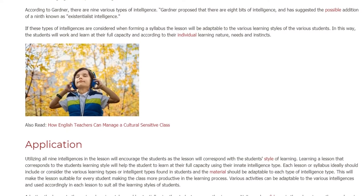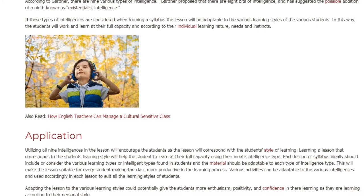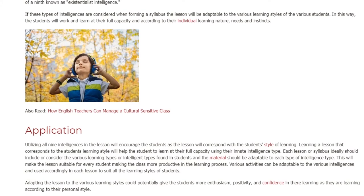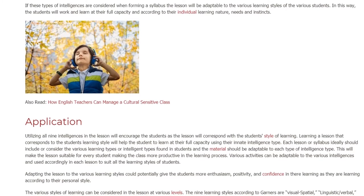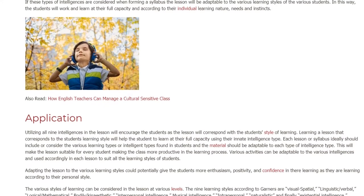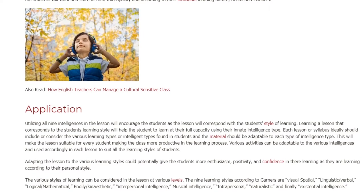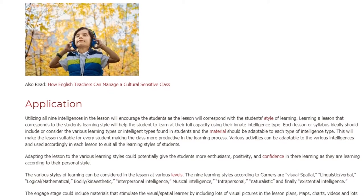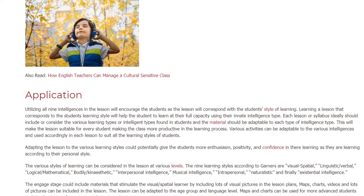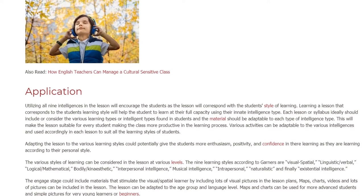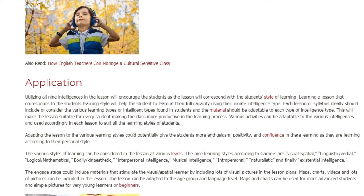Learning a lesson that corresponds to the student's learning style will help the student to learn at their full capacity using their innate intelligence type. Each lesson or syllabus ideally should include or consider the various learning types or intelligence types found in students, and the material should be adaptable to each type. This will make the lesson suitable for every student, making the class more productive in the learning process.